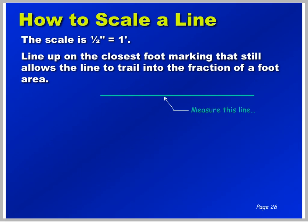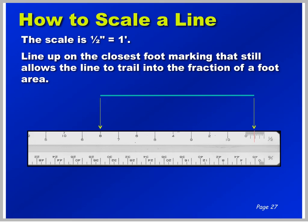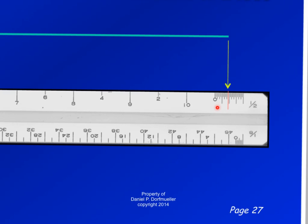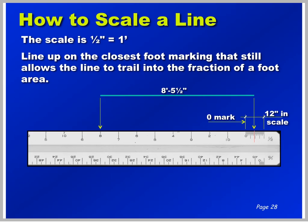Now let's measure one more line. What do you do first? Determine the scale — here it is 1 and 1/2 inch equals a foot. Next, line up the proper scale along the line with the full feet mark going this direction, and the portion of a foot going this direction. Then read off the feet: 1, 2, 3, 4, 5, 6, 7 — we have 8 feet going this direction. And from the zero mark we have 5 and 1/2 inches. Final answer being 8 foot 5 and 1/2 inches for this line.